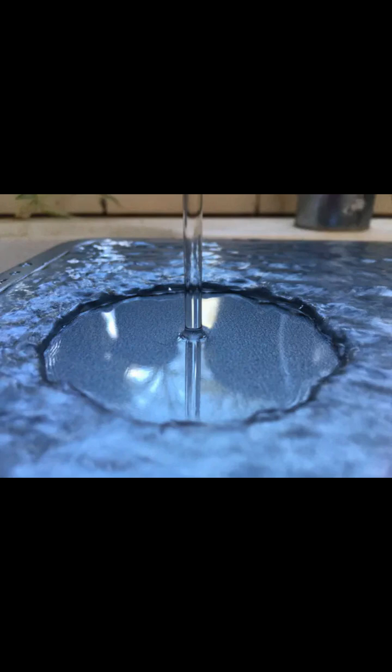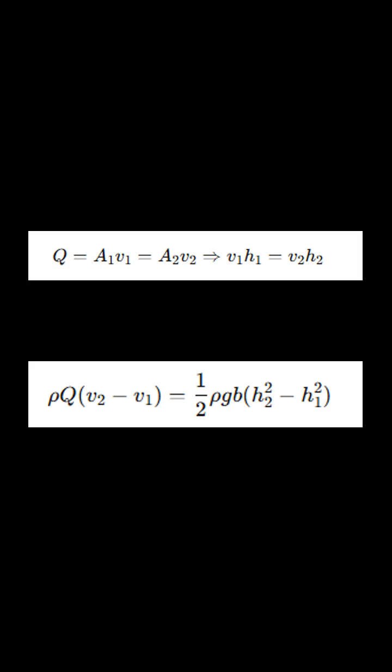To model the hydraulic jump, we used only two tools from our course: the integral conservation of mass and the integral conservation of momentum. We combined these equations, and after some algebra, we arrived at this formula for the jump height: h2 over h1 equals one-half times the square root of one plus eight Fr1 squared minus one, where Fr1 is the Froude number, a ratio between inertial and gravitational forces.